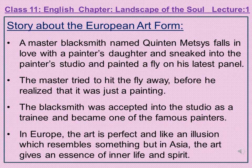In these lines, the writer says that during the 15th century in Antwerp, a master blacksmith named Quentin Mestace fell in love with the painter's daughter. Since the father was not accepting their relationship because of the blacksmith's profession, he sneaked into the painter's studio and painted a fly on his latest panel. The painting was so real that the master tried to hit the fly away before realizing it was just a painting. The blacksmith was accepted as a trainee, married the painter's daughter, and later became one of the famous painters of his age. The two stories illustrate art in two regions — in Europe, perfect illusionistic art, and in Asia, the essence of inner life and spirit.